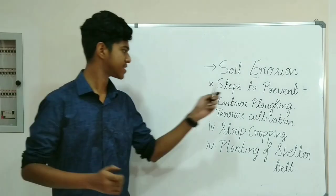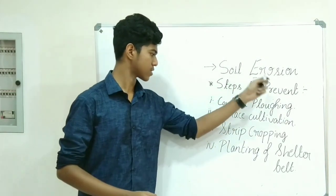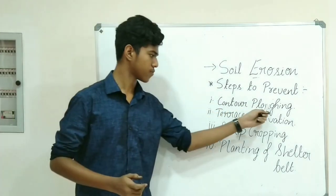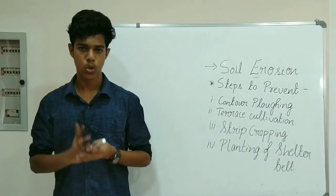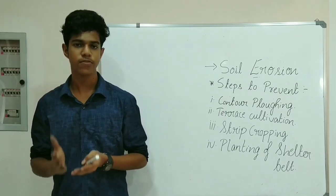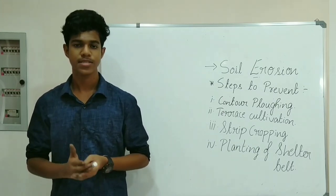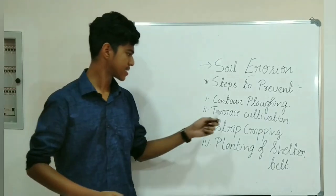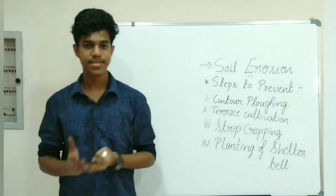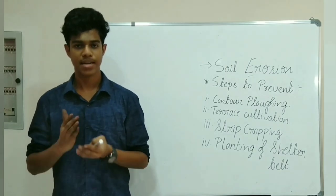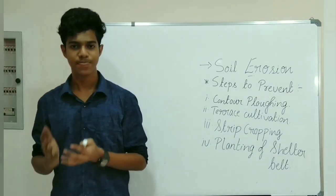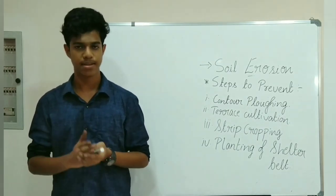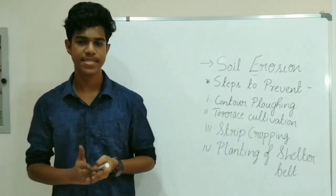Now we learn about steps to prevent soil erosion. The first major step is contour plowing. Plowing along the contour lines can decrease the rate of water flow down the slopes, which in turn helps to prevent soil erosion. The second method is terrace cultivation, practiced by cutting terraces on the slopes. It is practiced on the western and central parts of the Himalayas and helps to prevent soil erosion.